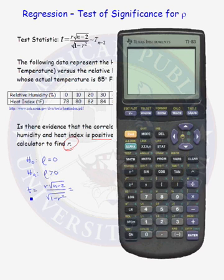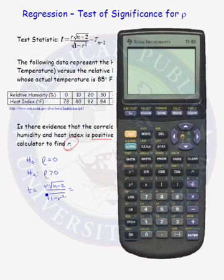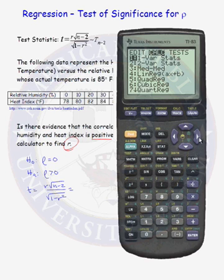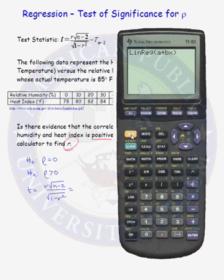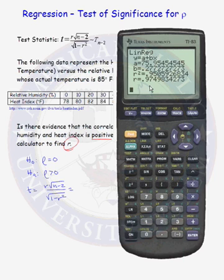Now we're ready to calculate the value of our test statistic. To do that, we need the sample correlation for our eleven data pairs. We will run linear regression on the calculator. My data is already stored in list one (x data) and list two (y data). We go to Calc number eight, linear regression, entering x data comma y data. We see that r is approximately 0.975.